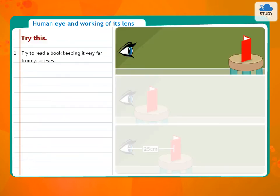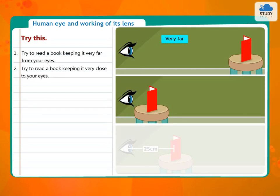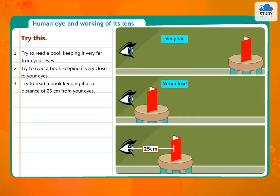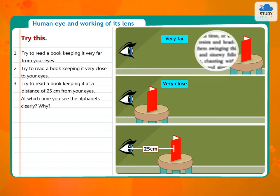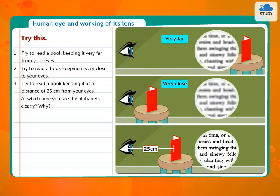Try this: 1. Try to read a book keeping it very far from your eyes. 2. Try to read a book keeping it very close to your eyes. 3. Try to read a book keeping it at a distance of 25 cm from your eyes. At which distance do you see the alphabets clearly and why?